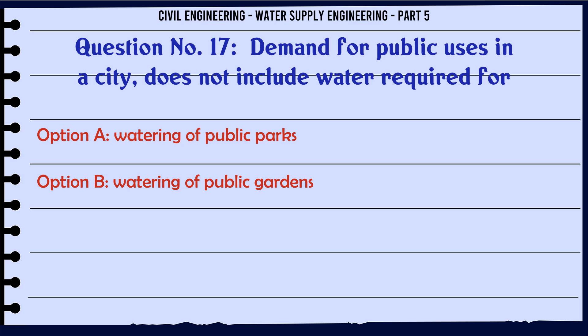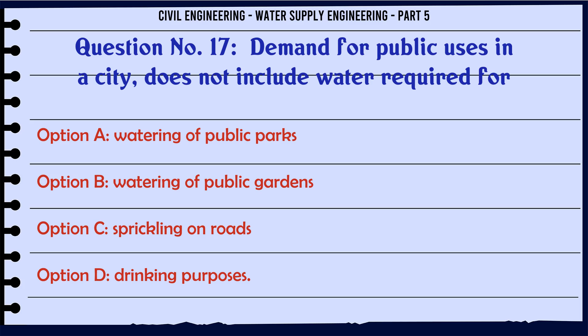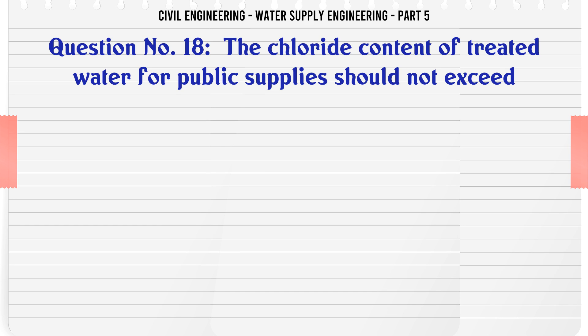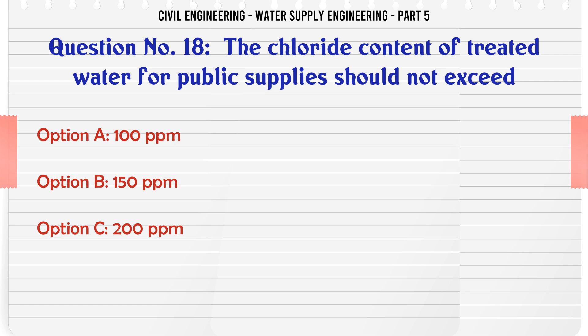Demand for public uses in a city does not include water required for: A. Watering of public parks, B. Watering of public gardens, C. Sprinkling on roads, D. Drinking purposes. The correct answer is Drinking purposes.